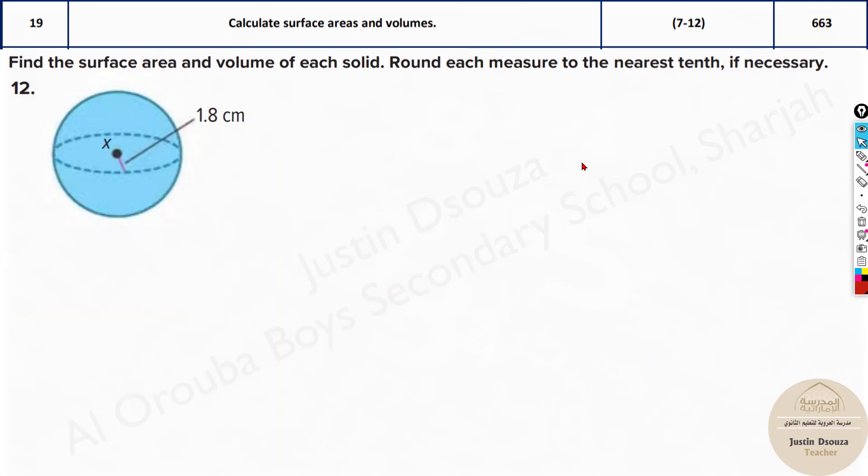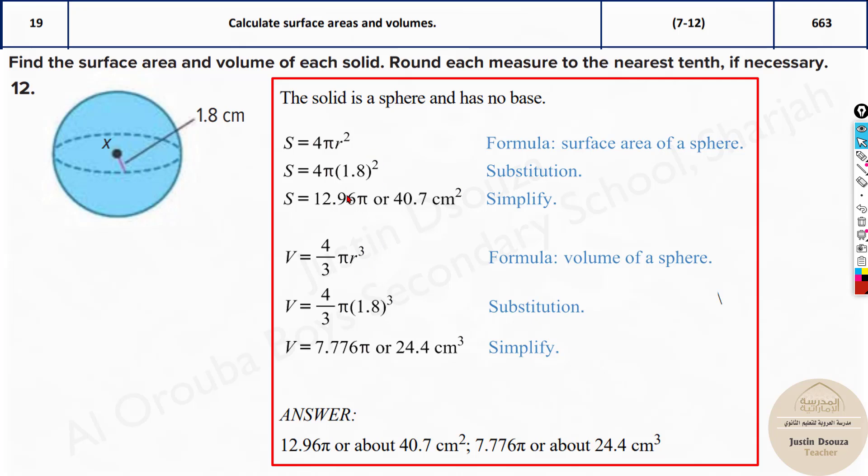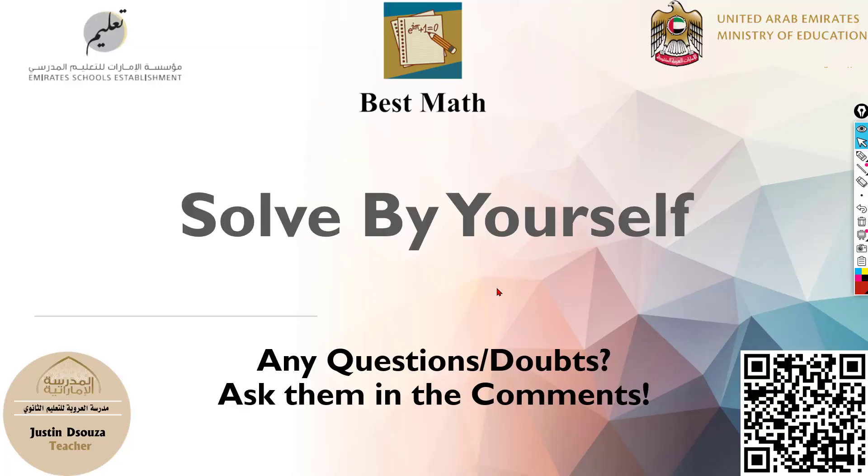And this is a sphere. Please do remember the formulas. Sphere is pretty simple because you only have radius. There's nothing else. All you need to know is radius and then the formulas. Surface area is given by 4 pi r squared. And the volume is 4 by 3 pi r cubed. So that's how we solve them. Please remember the formulas. Practice more problems, and it will be very easy.